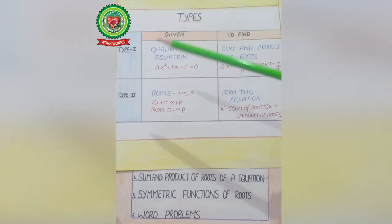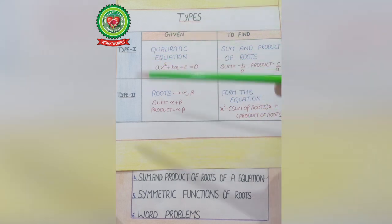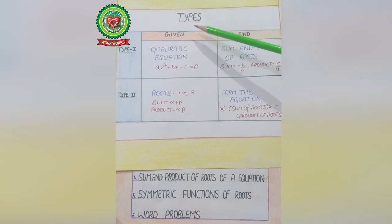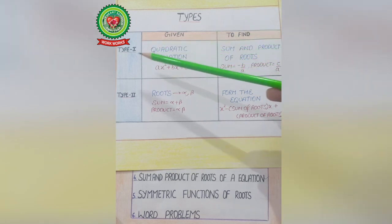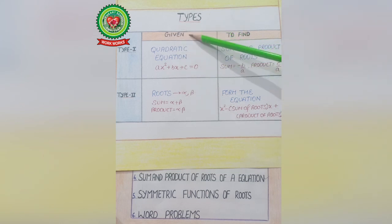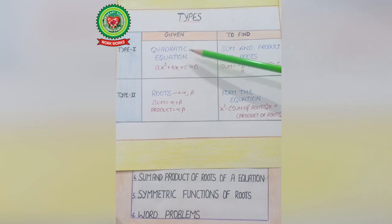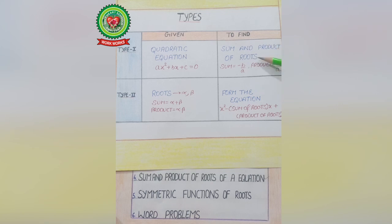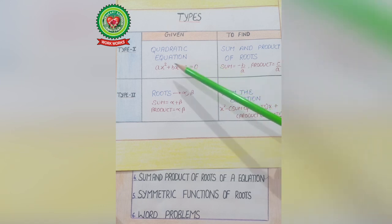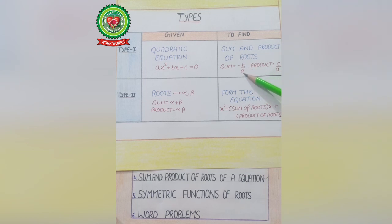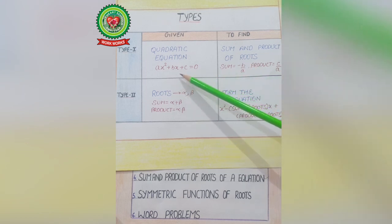So in the first type, this chart is going to make it clear. In Type 1, what is given to you and what you have to find. In Type 1, a Quadratic Equation is given to you in the form ax² + bx + c = 0. We have to find the Sum and Product of Roots. The Sum of Roots formula is −b/a. We take values from this equation, and the Product of Roots formula is c/a.